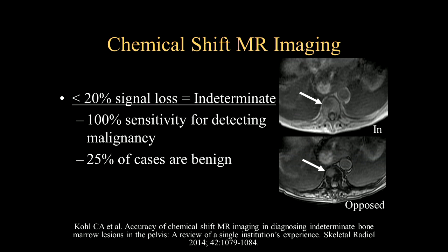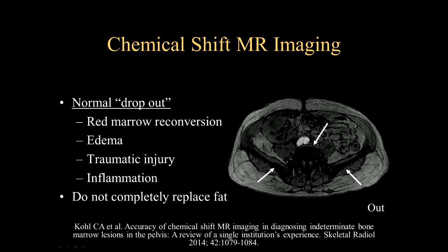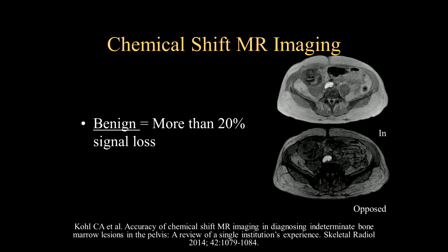Sometimes it can be confusing, so you can add chemical shift imaging — in and out of phase imaging — to help resolve questionable cases. If there's less than 20% signal loss going from in phase to out of phase, this is indeterminate, as 25% of cases are going to be benign. Chemical shift imaging can help resolve questionable cases when there is a dilemma. As you look at the in and out of phase imaging, note the marked signal drop-off in out of phase imaging throughout the visualized skeleton. This can be caused by red marrow reconversion, but also edema, traumatic injury, and inflammation. It helps differentiate from a diffuse infiltrating malignant process — if it's more than 20% signal loss, you can feel confident this is a benign diagnosis such as red marrow hyperplasia.